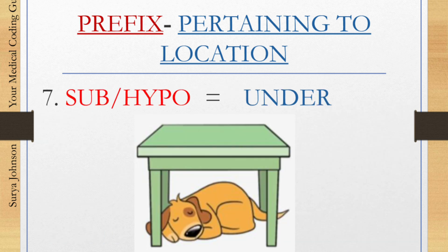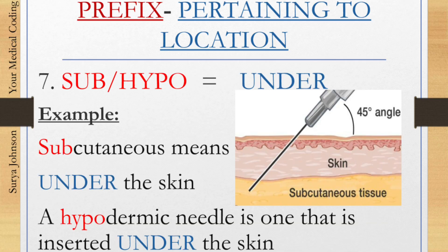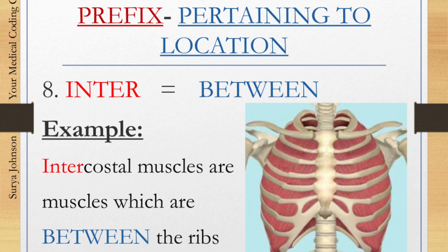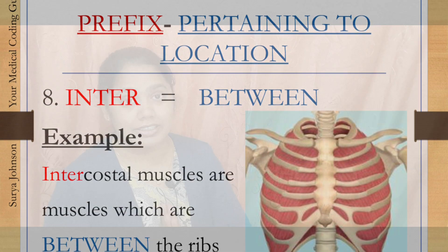Number seven: the prefixes 'sub' and 'hypo' mean under. Example: subcutaneous means under the skin. For hypo, example: hypodermic needle — that is a needle that is inserted under the skin. Number eight: 'inter' means between. Example: intercostal muscle — the muscles which are between the ribs.